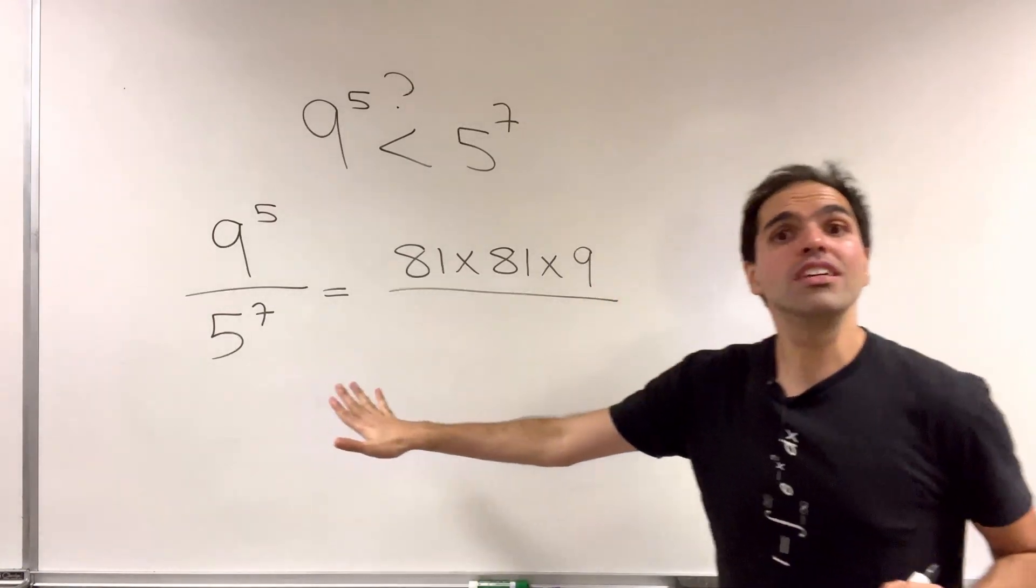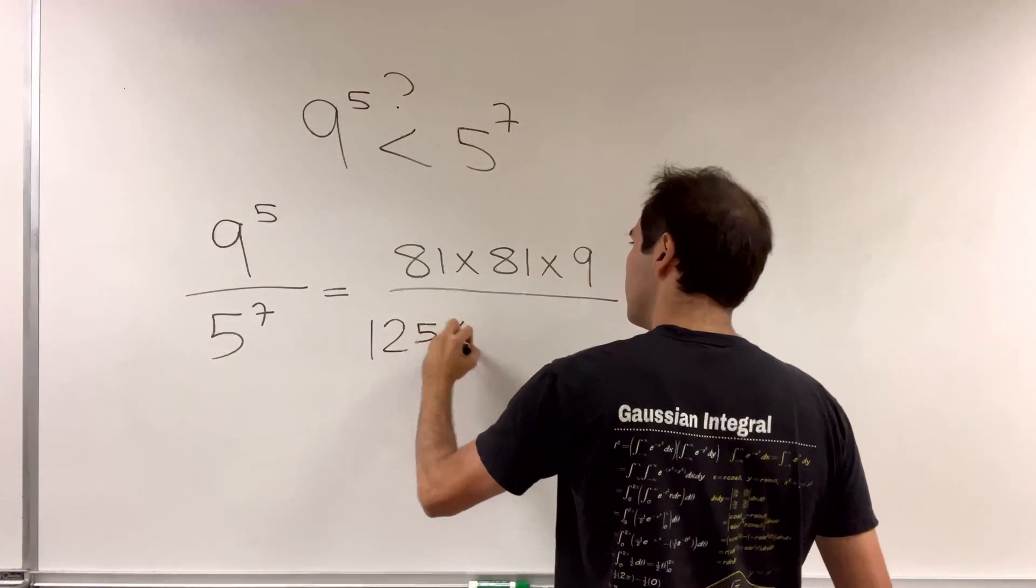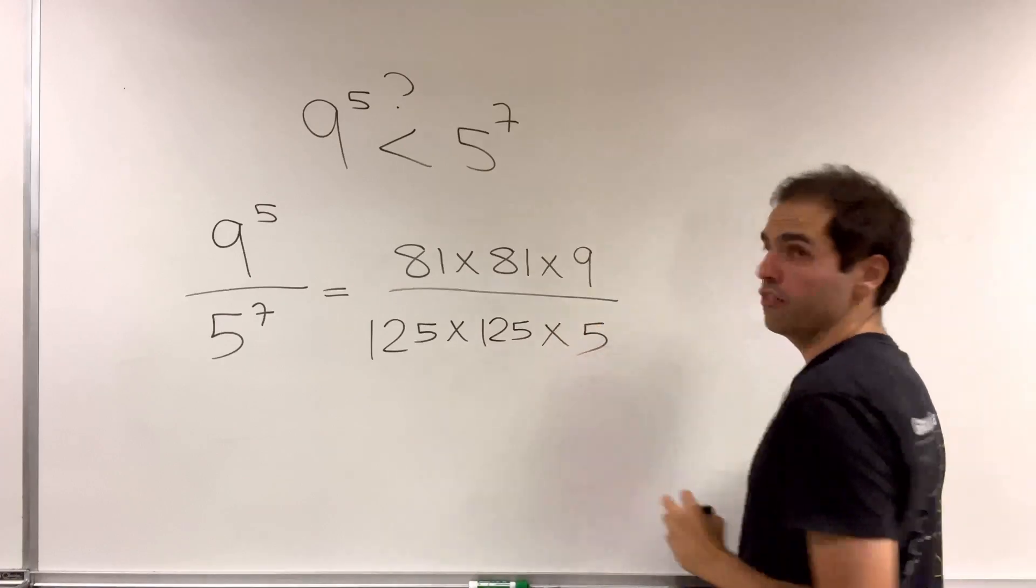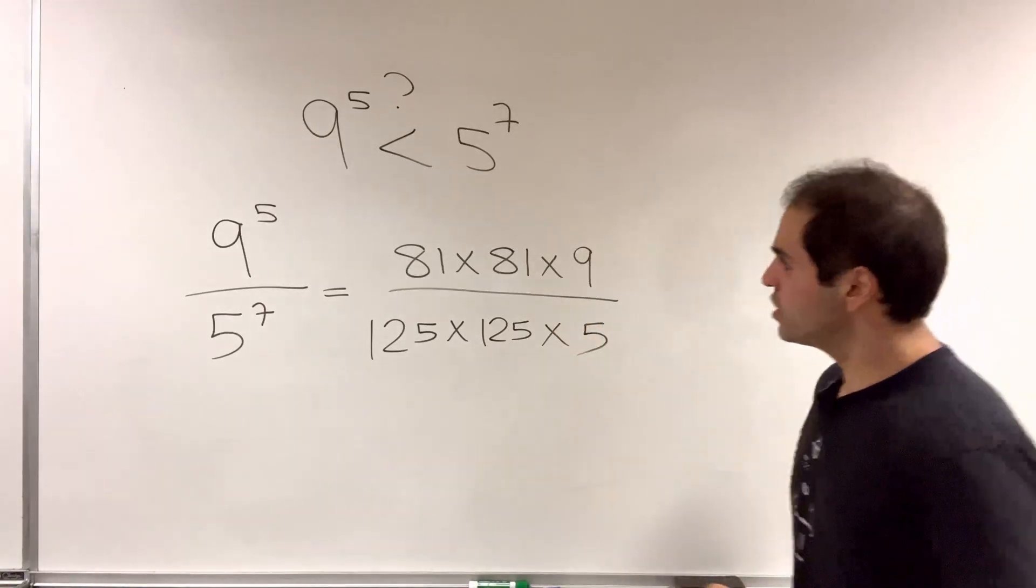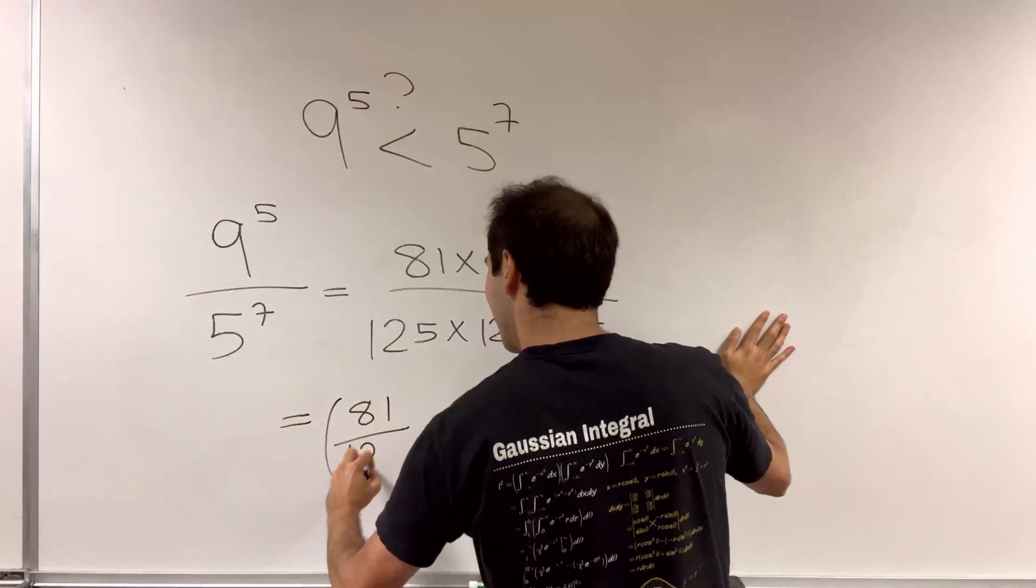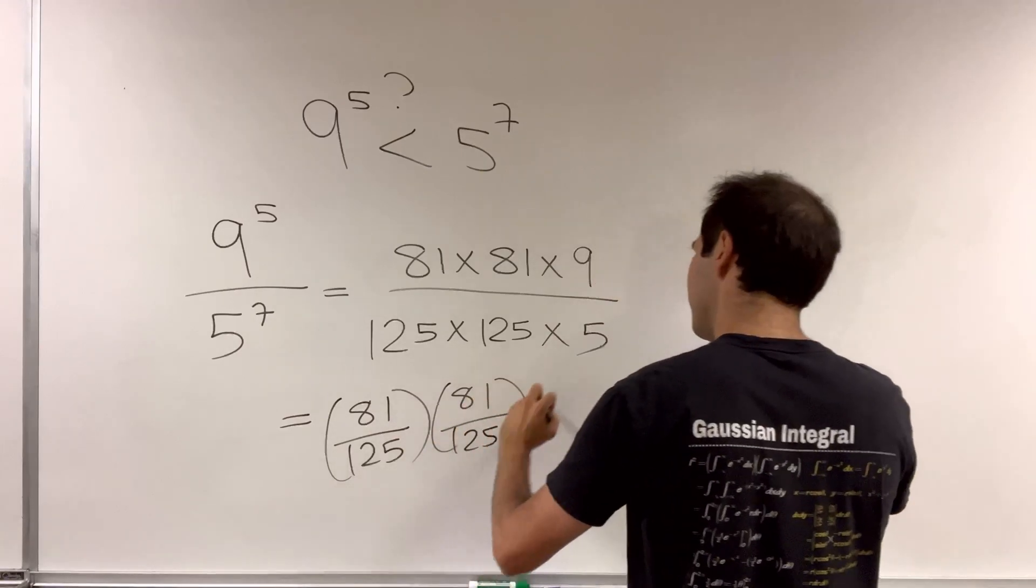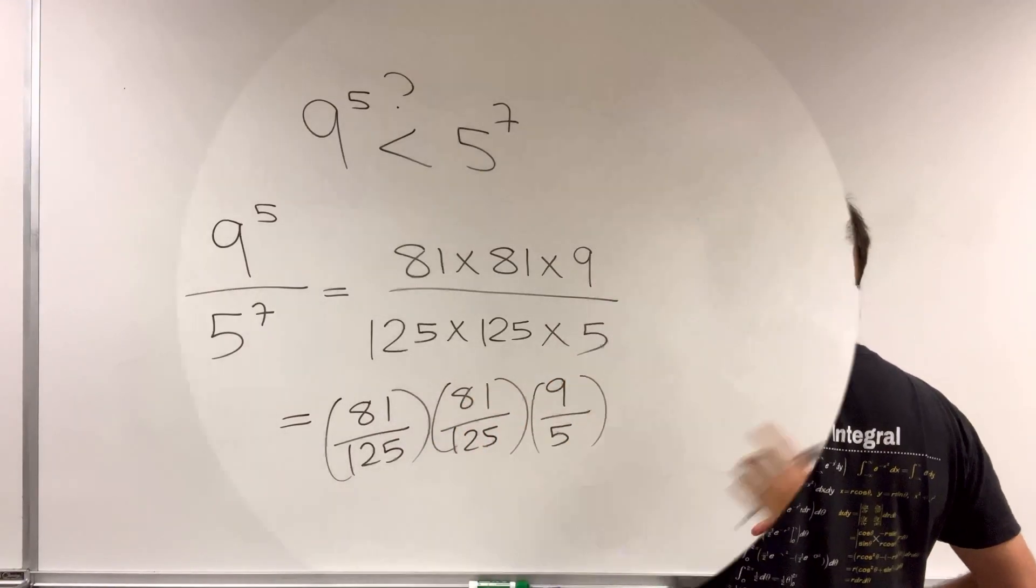And 5 to the 7th, which is 125 times 125 times 5. Which now you can rewrite as 81 over 125, 81 over 125, and 9 fifths.